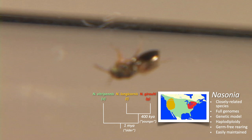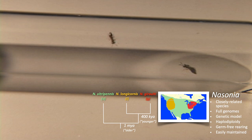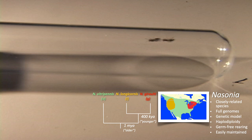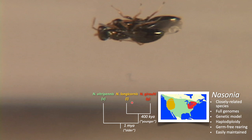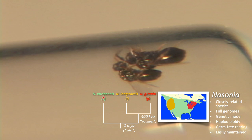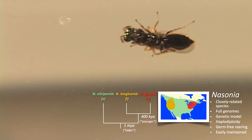This is the Nasonia wasp — it's known as a jewel wasp because it has a metallic green sheen and golden legs. You're going to see some mating behavior between a female and a male. There are three species in our talk today: V, L, and G for short, and they all diverged in the last million years. We call the older species pair Vitripennis to Giraulti (V to G), which is about one million years old, and the younger species pair L to G, which is only 400,000 years old.